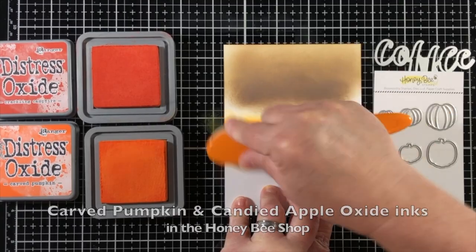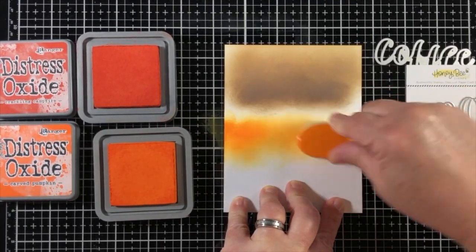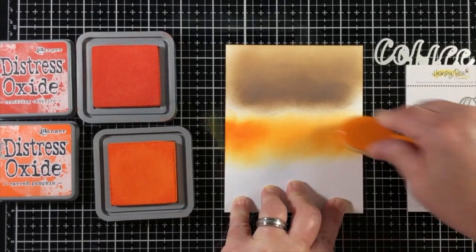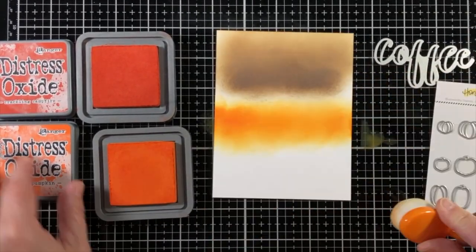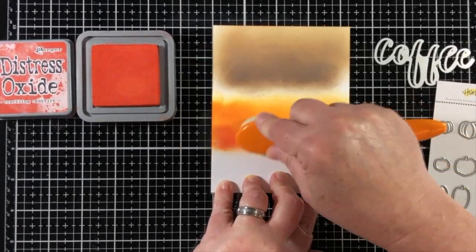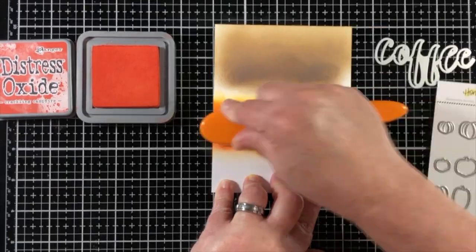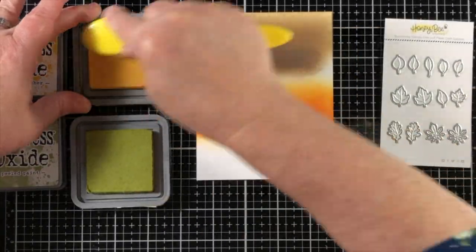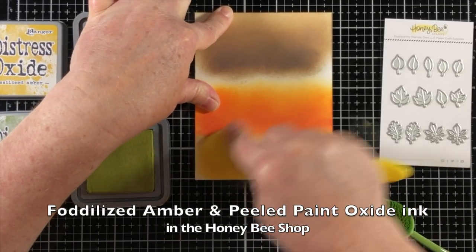I'm using distress oxides and a blending brush. I'm going to use the brown section for the coffee die cut and then create an orange colored section for the pumpkins. These are all new products from the autumn afternoon release that's available now in the Honey Bee store.